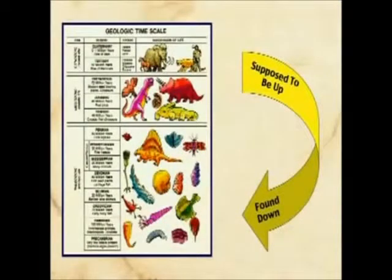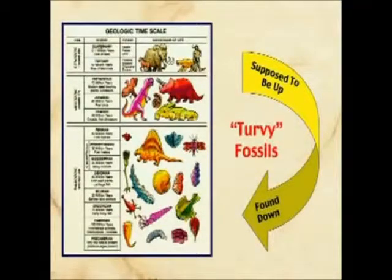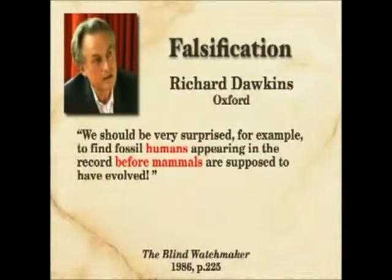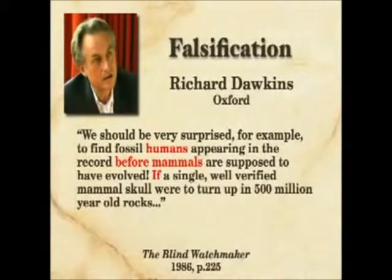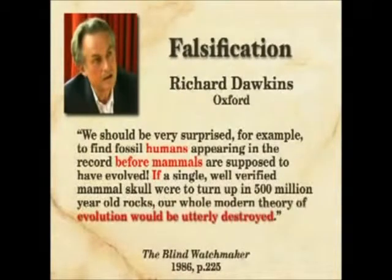But the thing that really is a test in the mind of the evolutionist is the other kind of contradiction — what's supposed to be up, found down — what we'll call the turvy fossils. Because if the mammals had not got there yet and you find them down at the bottom, then obviously you've got a real challenge. Richard Dawkins describes the implications: we should be very surprised to find humans appearing in the record before mammals are supposed to have evolved. If a single well-verified mammal skull were to turn up in 500-million-year-old rocks, our whole modern theory of evolution would be utterly destroyed. We have found that kind of thing rather commonly.